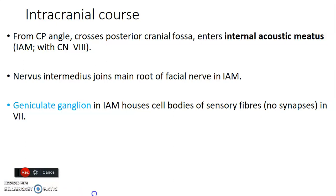The intracranial course: from the cerebellopontine angle, the facial nerve crosses the posterior cranial fossa, then enters the internal acoustic meatus together with the eighth cranial nerve, the vestibulocochlear. The nervous intermedius portion, which has sensory and parasympathetic components, joins the main root of facial nerve within the internal auditory meatus. The geniculate ganglion forms within the internal auditory meatus and houses the cell bodies of the sensory fibers, but there is no synapsing within this ganglion.